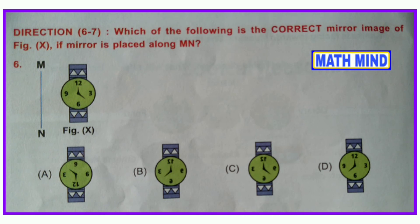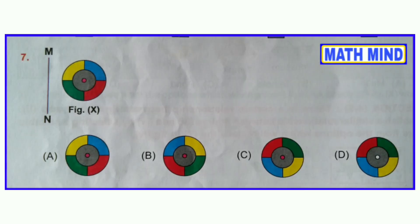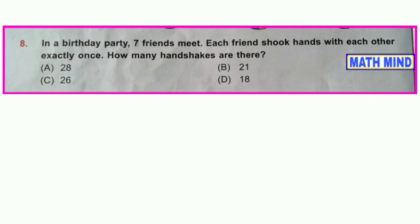Questions six and seven: Which of the following is the correct mirror image of figure X if the mirror is placed along a line? Question number six — look at the picture: which is the correct mirror image when the mirror is placed vertically? Option B is correct. Question number seven — look at the picture: here also option B is correct.